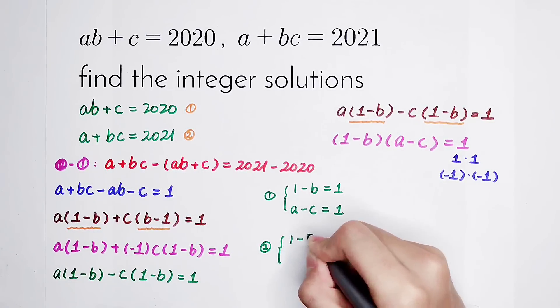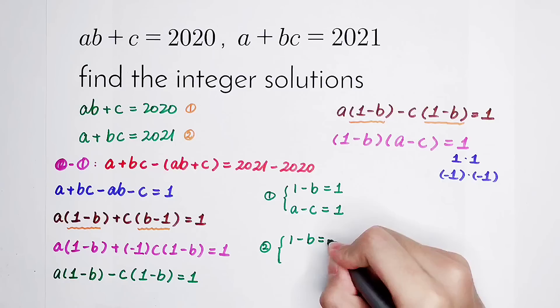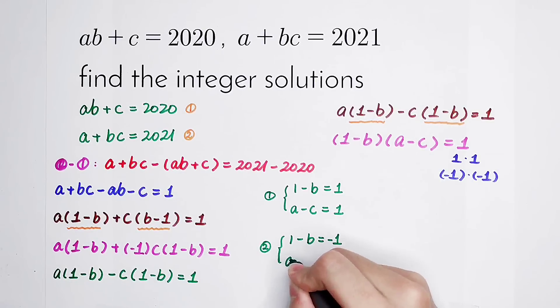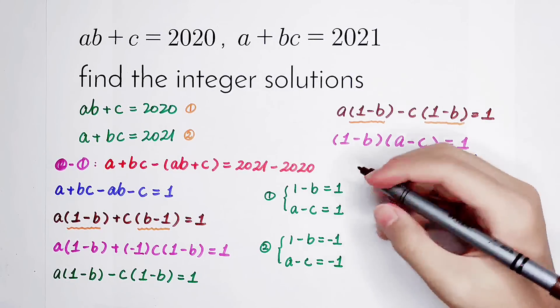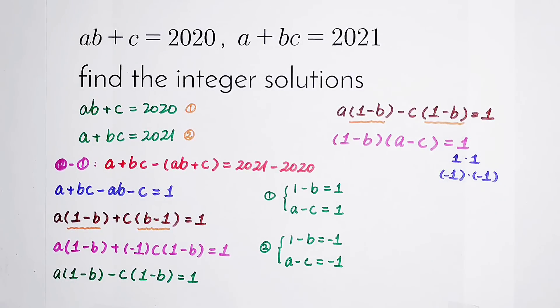1 minus B, this one just changes into minus 1. And here A minus C is also minus 1. So now from these two cases, I have to solve the value of A, B, and C. From this case,